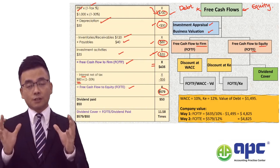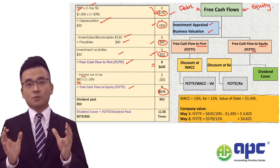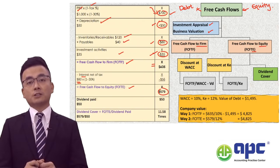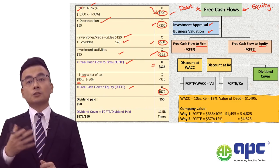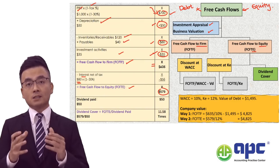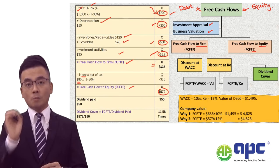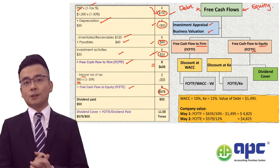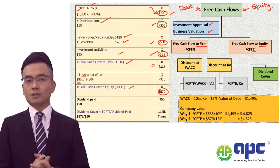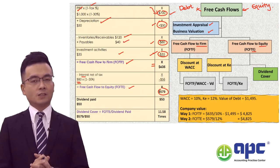To recap: when calculating the free cash flows to firm, to arrive at the free cash flows to equity you subtract interest multiplied by (1 minus the tax rate) — whether that's 30% or whatever rate the examiner specifies.